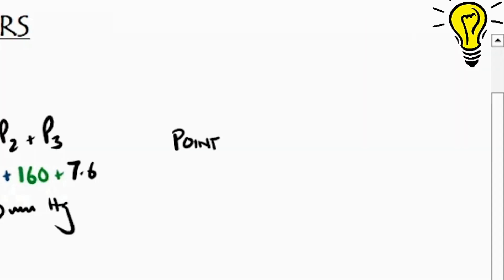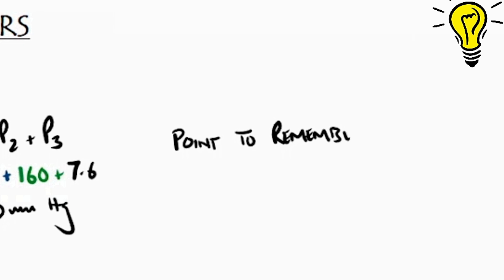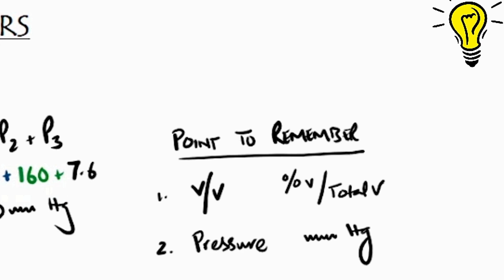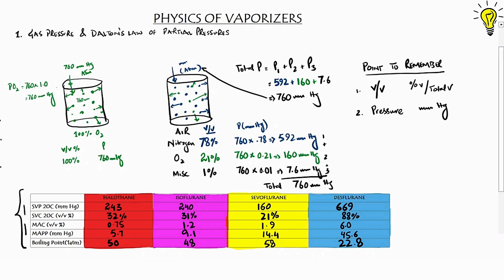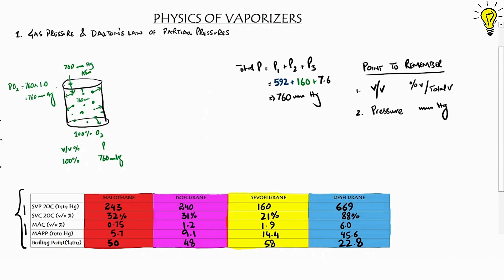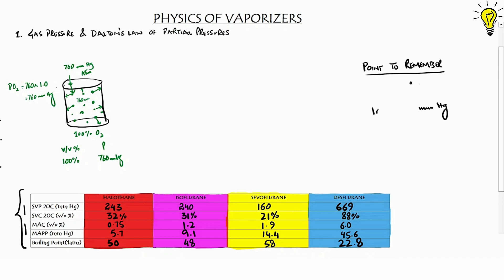This is called Dalton's law of partial pressures: the total pressure exerted by a mixture of gases is equal to the sum of individual gas pressures. So 592 mmHg of nitrogen, plus 160 mmHg of oxygen, plus 7.6 mmHg of miscellaneous 1% gases equals 760 mmHg total. The point to remember: you are either seeing the vapor or gas in a mixture as its volume-by-volume concentration shown in percentage form, or as a definite partial pressure in mmHg. The concentration is a relative term, but the individual pressure is an absolute term. This concept will help you understand the difference between MAC values and minimum alveolar partial pressure values.